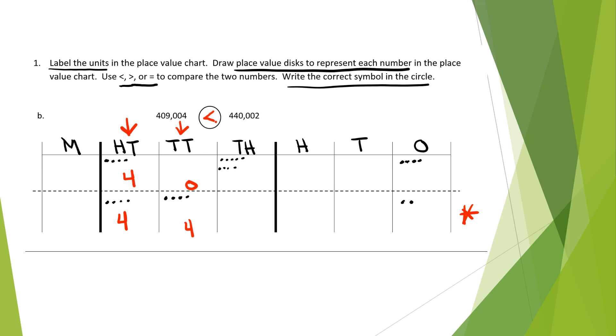And if I go up top, I'll know then that it has to be greater than this right. So we have 409,004 is less than 440,002.